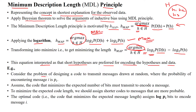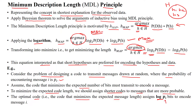For example, consider the problem of designing a code to transmit a message drawn randomly, where the probability of encountering message i is denoted as P(i). Assume a code that minimizes the expected number of bits that must be transmitted to the receiver. To minimize the expected code length, we should assign shorter codes to messages that are maximally a posteriori probable. The optimal code minimizes the expected message length by assigning minus log base 2 of P(i) bits to encode message i.